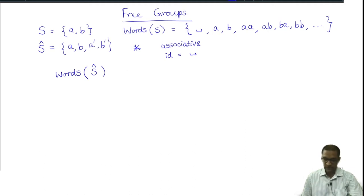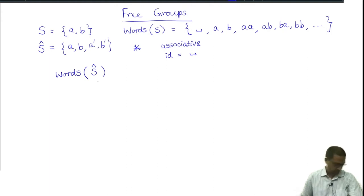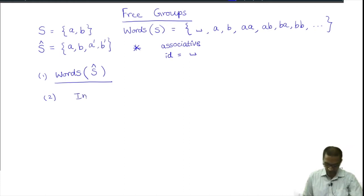We look at the set of all words in this four-element alphabet. That is still a very large set — it now has all words using a, b, a prime, and b prime. It still has the empty word, it still has an associative multiplication, and that associative multiplication still does not have inverses. So we have just replaced the original set words of S by a much larger set in some sense. But here comes the key step: we consider — this is Step 2, really the key to everything — a construction which will keep coming up in many places. We impose the following relations.